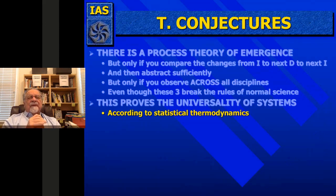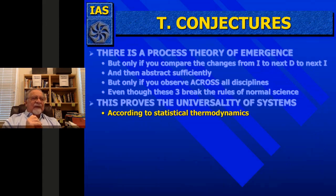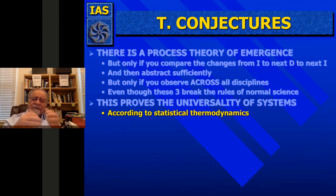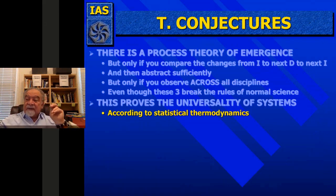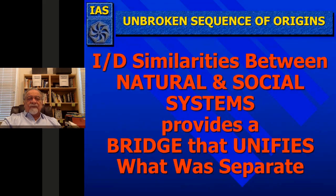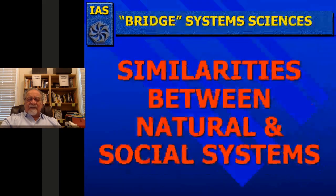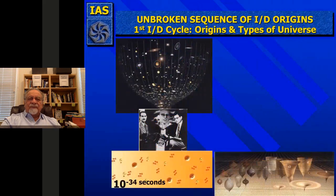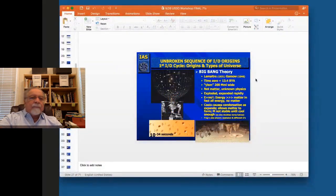Entropy is what happens—we lose the usability of energy as it goes through the various systems, and it's seen throughout this thing as the universe cools. So I've given you the integration-diversification similarities between natural and social systems. This provides a unification of the natural and social systems. And with that, I'm done. Thank you, Peter.